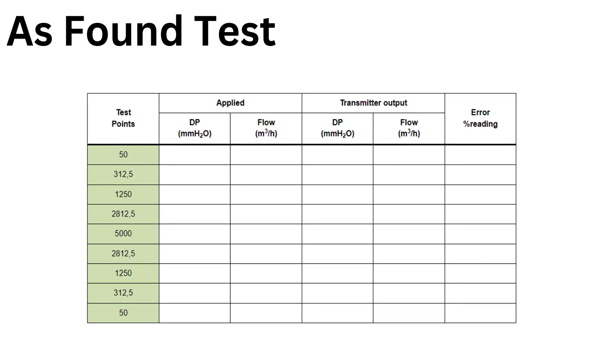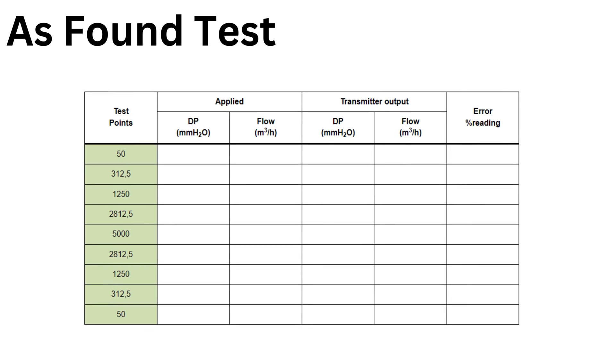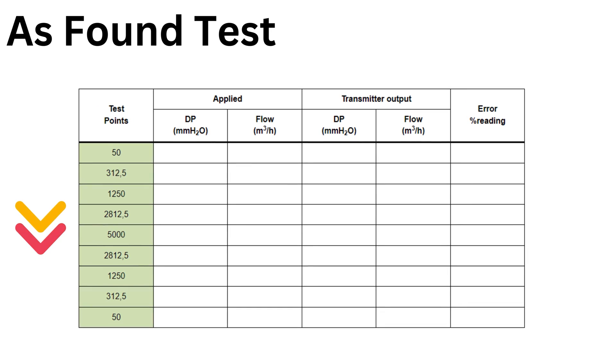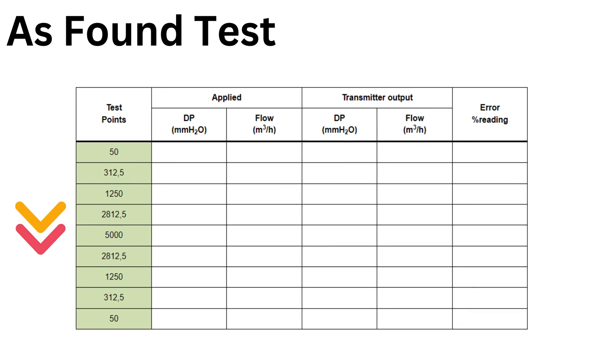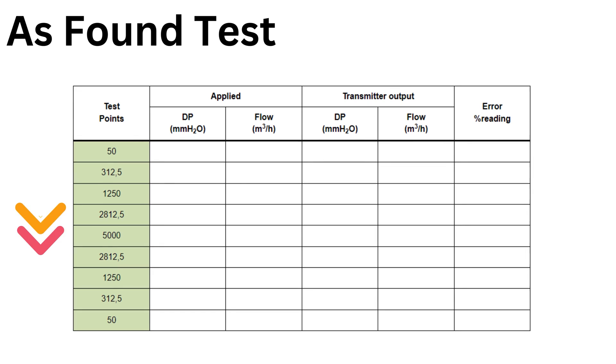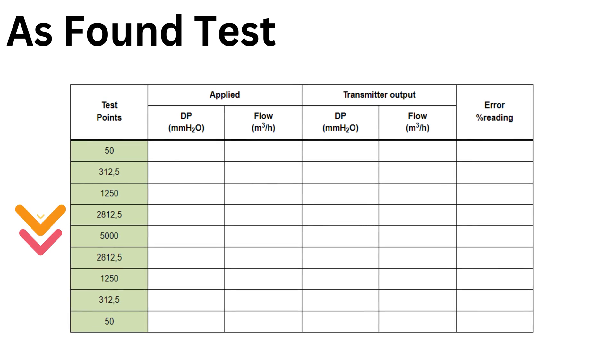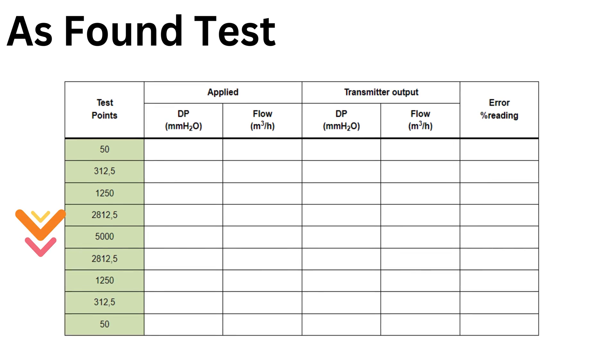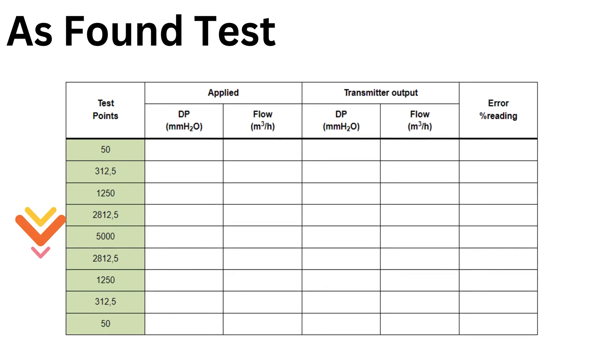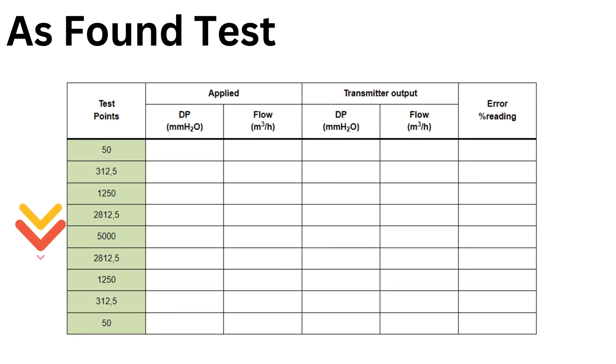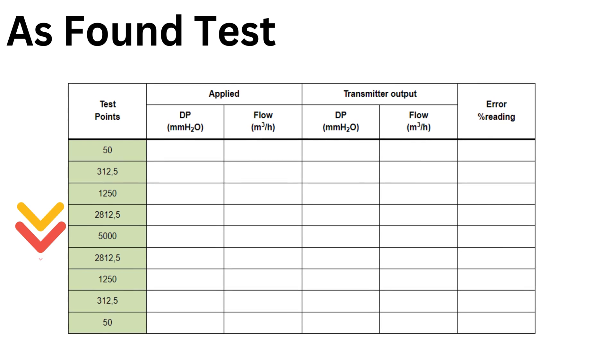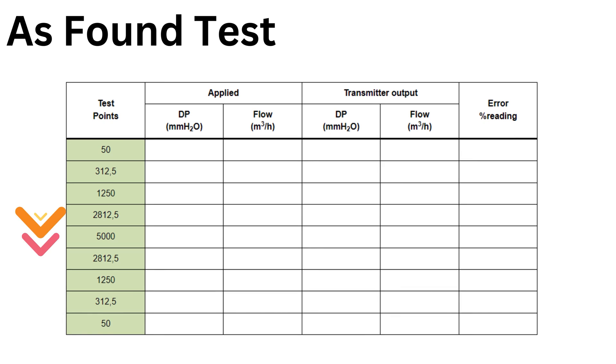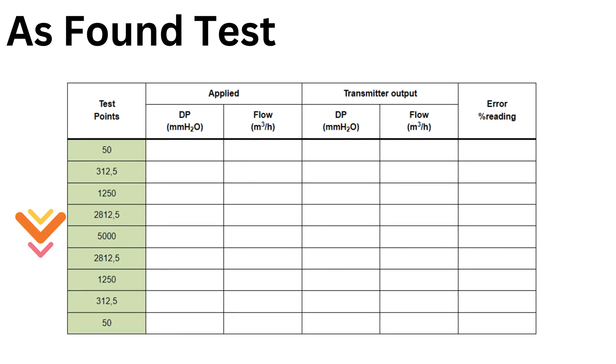We have filled in our test points based on a DP transmitter with square root extraction. You can see that our test points are going in ascending order from minimum to maximum value and then in descending order back to minimum. This is important because the results can be different for the same test point when approached from below or from above. So be very careful when approaching a test point not to overshoot it because if you have to come down again it will not give you the same result.